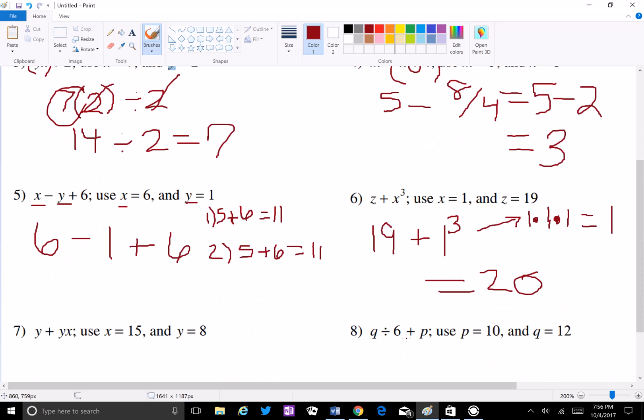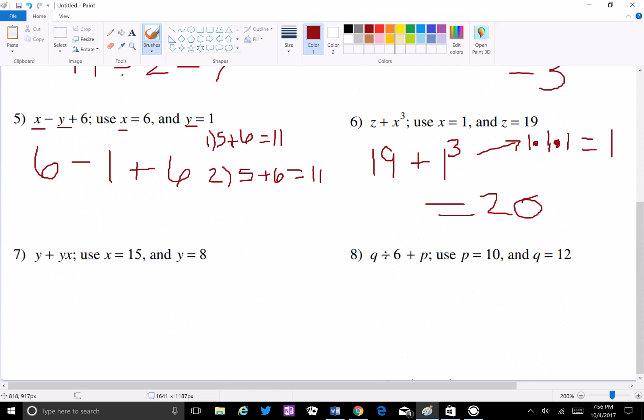Hopefully this helps you out. I can do a few more... I'll do this one, this one seems a little bit more difficult. q divided by 6 plus p. So where would you put the parentheses? With the 6 and the plus p, or the q and the 6? You would do the q and the 6. So you'd have 12 divided by 6 plus p which is 10, and 12 divided by 6 is 2, so you can cross that out, put a 2 here, and 2 plus 10 is 12.